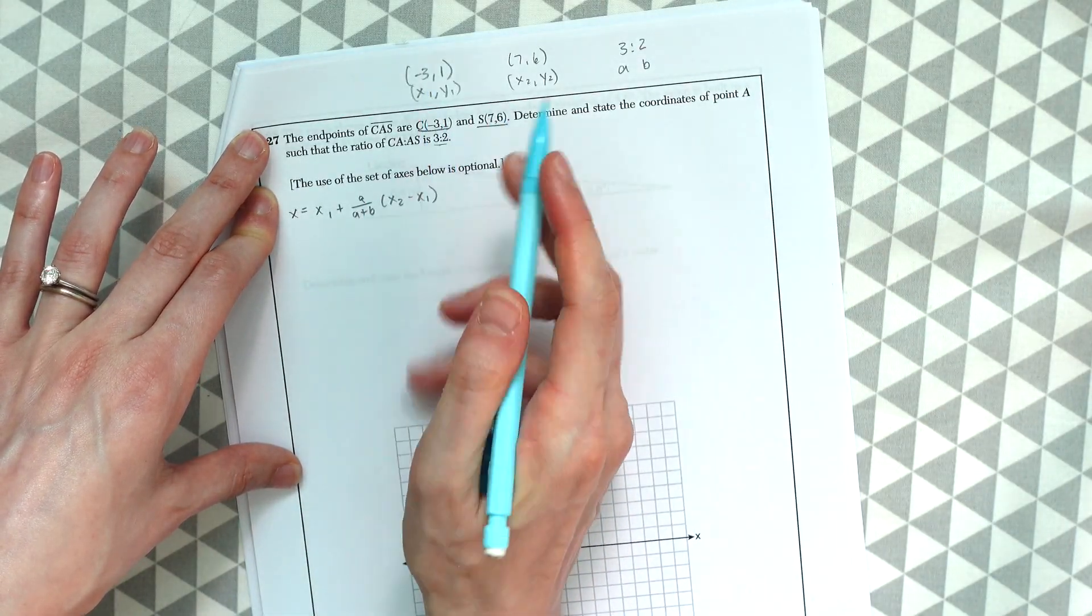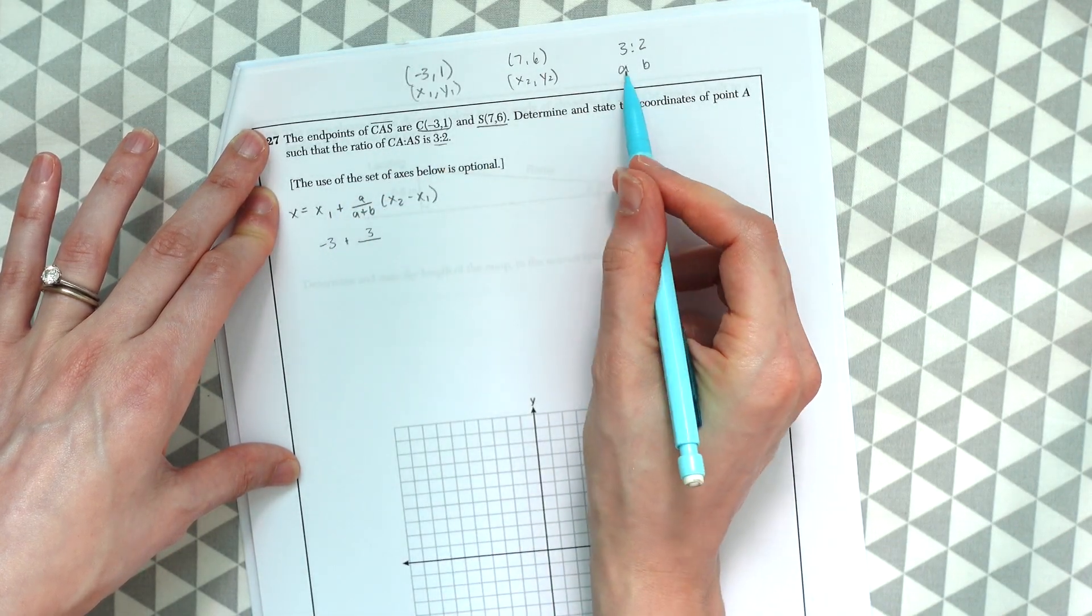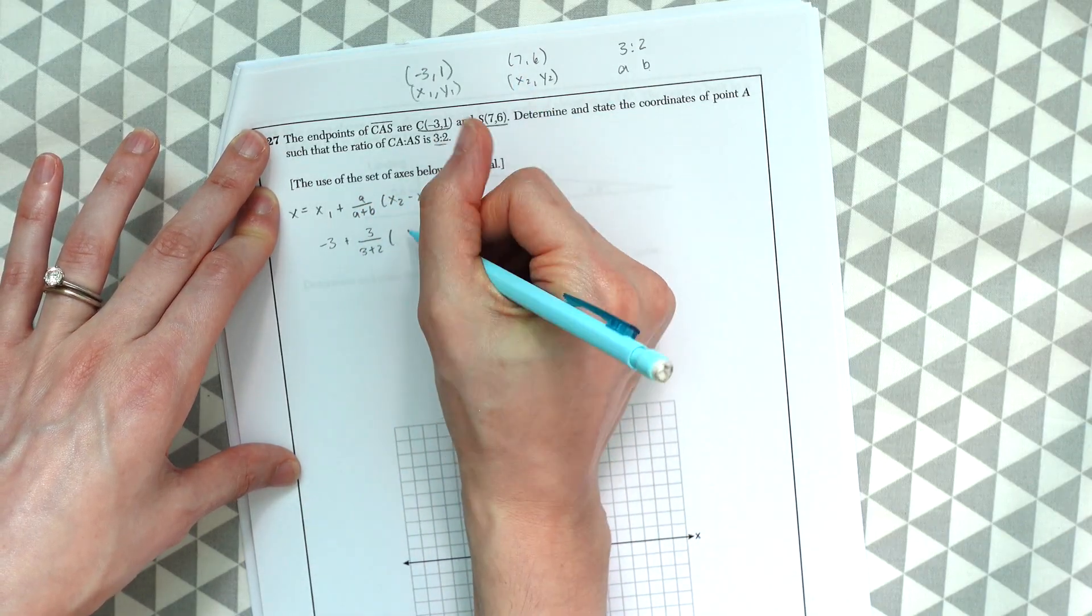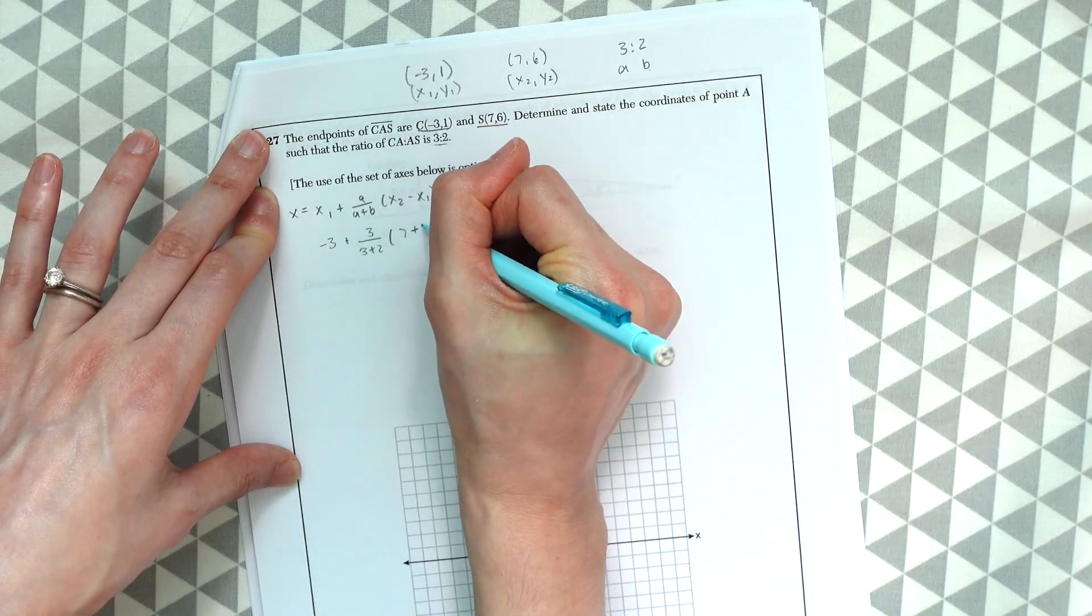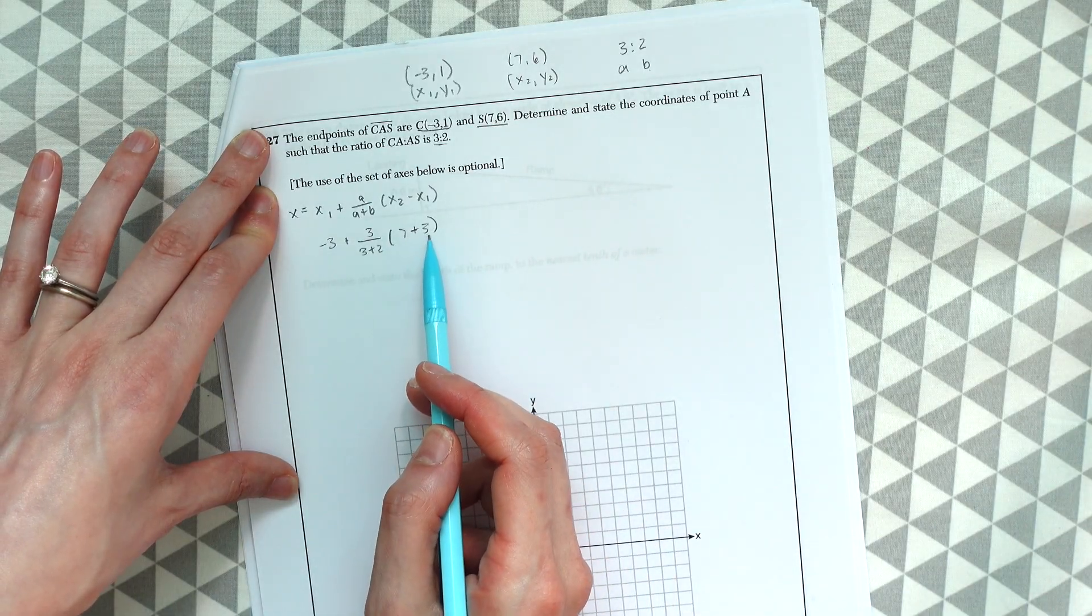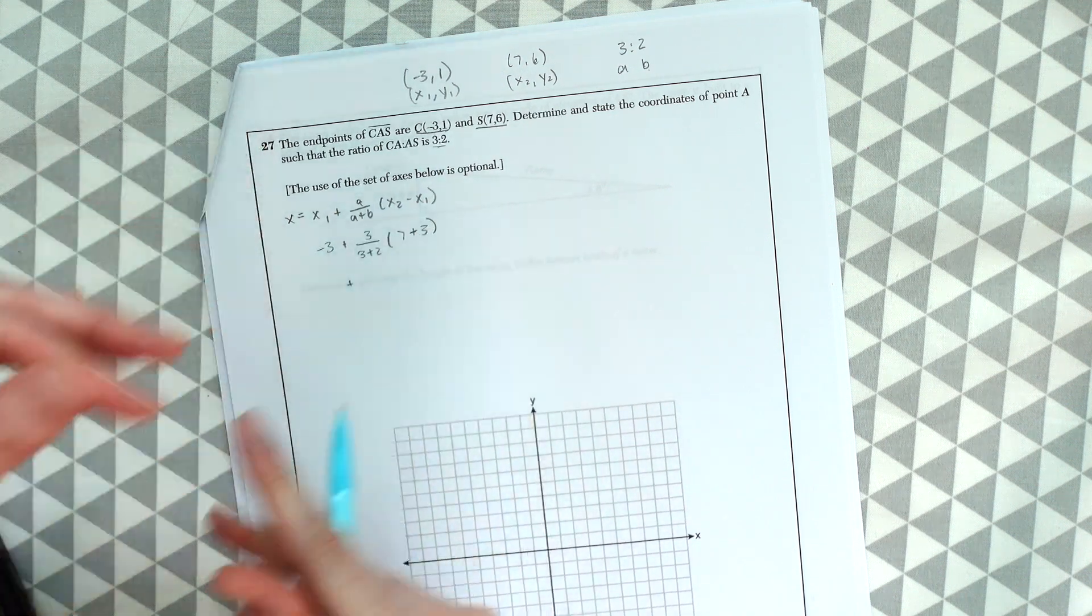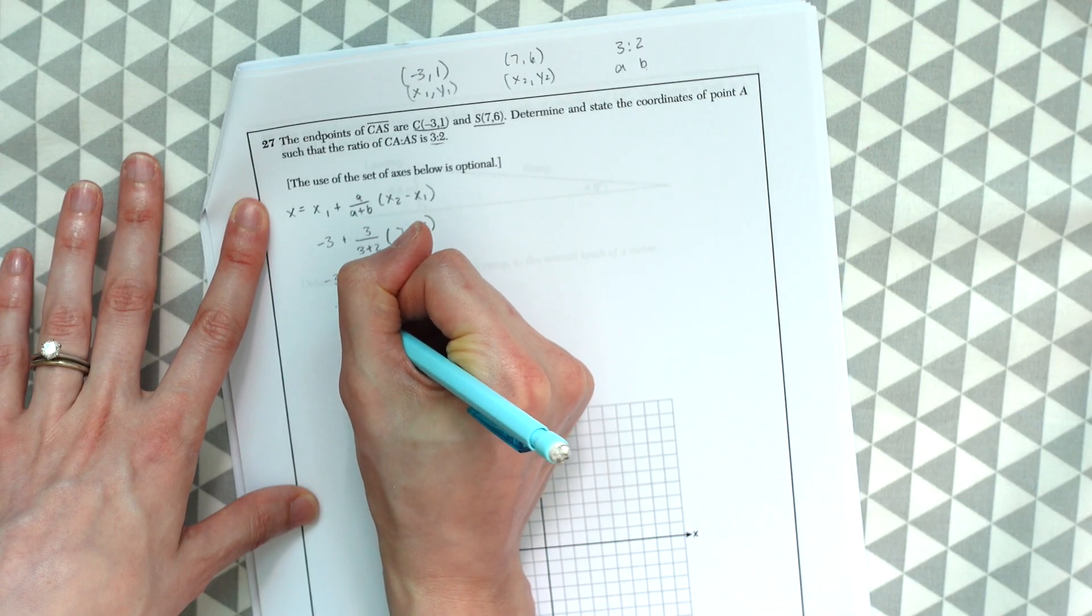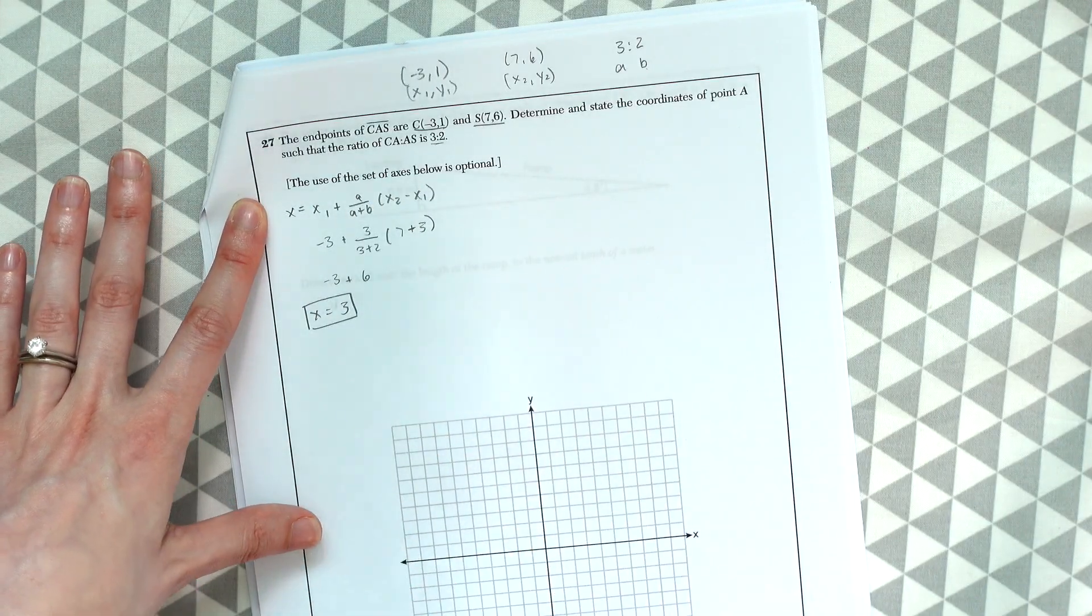So our x1 is negative 3 plus A which is 3 over A plus B. So that's 3 plus 2 times x2, 7 minus x1 which will give us plus 3. So you could plug this in or you could see this is going to be 30 over 5 which gives us 6. So we get negative 3 plus 6 which will give us 3. So we get x is equal to 3.